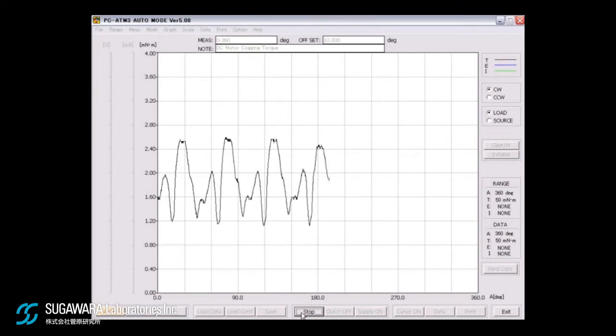Specially designed torque sensors with optimal spring constant ensures stable measurement in both plus and minus directions. This is the complete cogging torque data of one rotation.